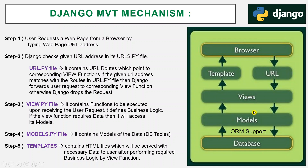After processing the request, the data is available in the view function. The view function then injects the data into the HTML document, and Django serves the final HTML document — the HTML template with the populated content — to the browser.